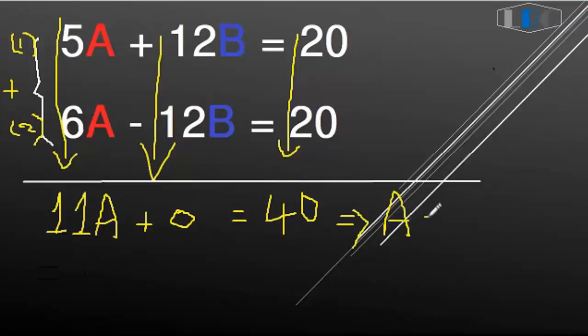A equals 40 divided by 11, which equals 3.636.